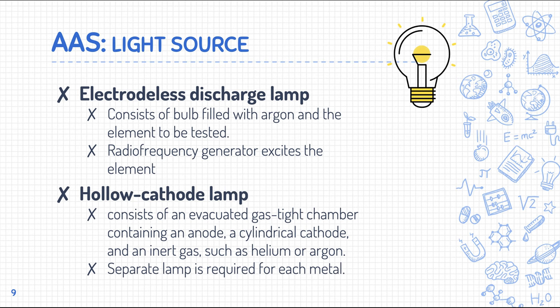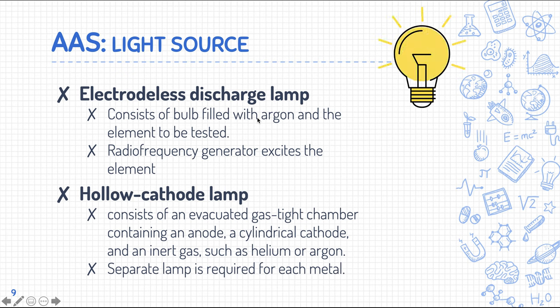The electrodeless discharge lamp works in a very similar manner, the only difference being that it does not have a cathode or anode. Instead it uses a radio frequency generator. The argon inside is excited by the radio frequency generator, and as the argon returns to its ground state it emits light — that is how the AAS light source produces light.